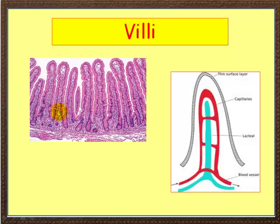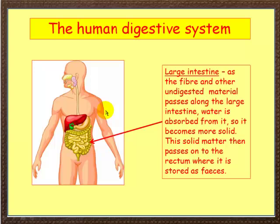Some people do not have villi in their small intestine, and they have a condition that means they can't absorb food properly. Moving down, we come to the large intestine.